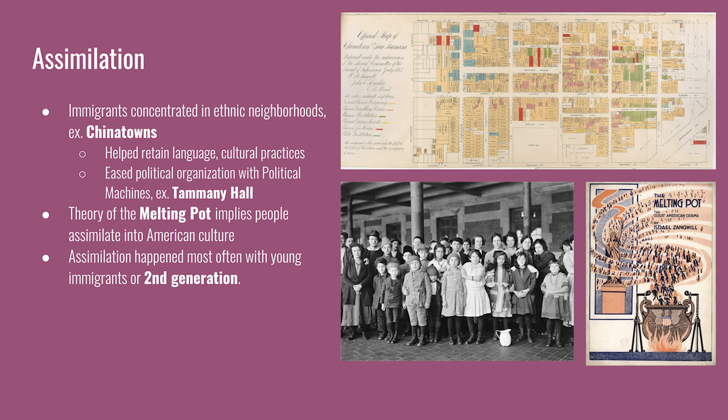The assimilation that nativists were looking for was actually most often seen in the younger generations. The second generation of immigrants — either children brought to the U.S. or the first generation born there — assimilated much faster because of the growth of the public school system at the end of the century.